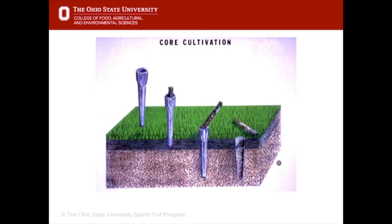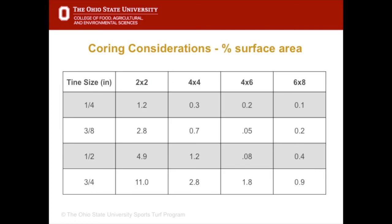In the previous pictures, a coring machine used hollow tines penetrating the soil to a depth of about three inches. This is a schematic drawing of the impact of a hollow tine on turf. To improve soil compaction, at least 10% of the surface area needs to be cored. As you can see in this table, the amount of surface area affected depends upon the size and spacing of the tines used.